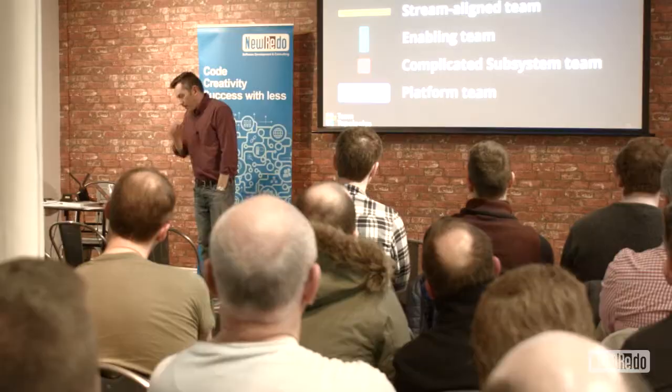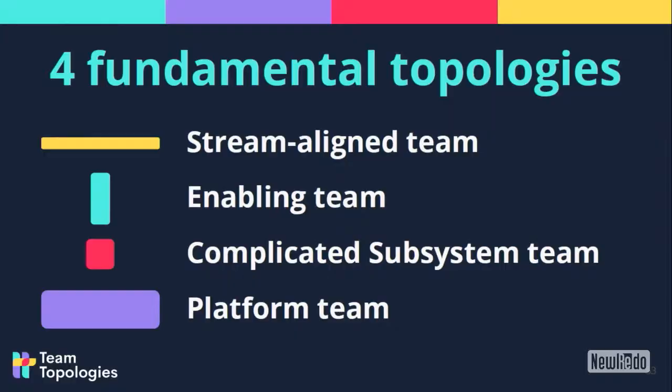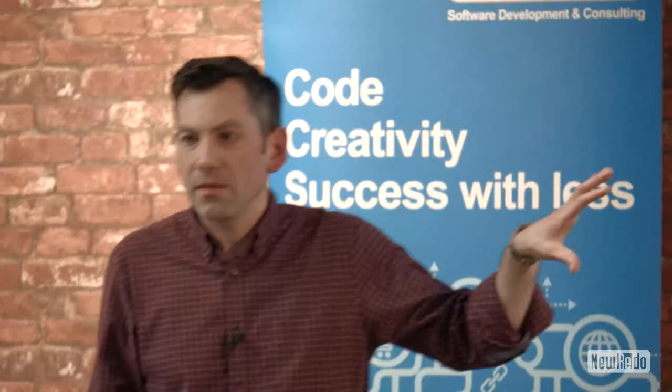A lot of the confusion inside organisations is down to people not knowing why they're interacting in a particular way with another team. They don't know why they're collaborating, or why they're not collaborating, or why the thing they're trying to consume is so difficult to use. In the book, we talk about four different fundamental team types — and as far as we're concerned, these are the only team types really needed for modern software development.